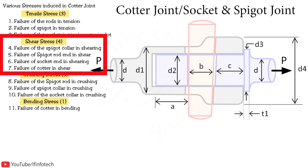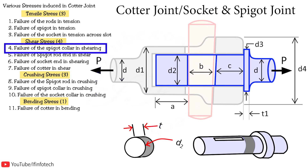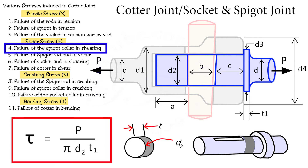The next stress is shear stress. The failure occurs due to shear stress at the diameter of the spigot end collar, and the formula is load P divided by area of cross-section, i.e., pi times d2 times thickness d1.